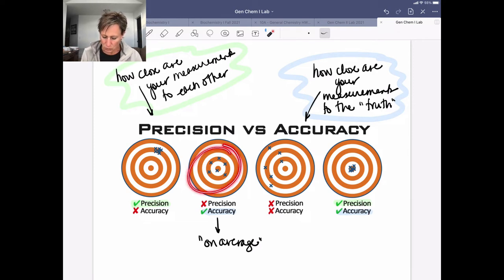So in this case, even though the data wasn't precise, it's fairly accurate because on average, we're going to be hitting the center of the bullseye. This is the worst case scenario. We're neither precise nor accurate with our data. And we can see that not only is our data not close to one another, but on average, it's not going to hit the bullseye. So that's our least desired scenario. So be able to think about precision and accuracy.